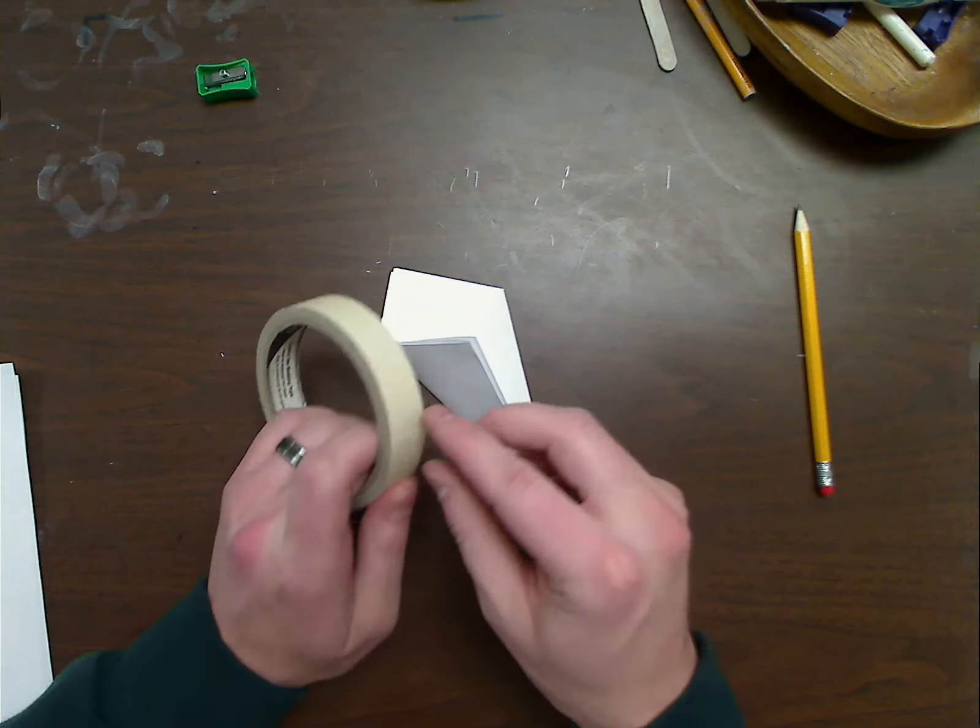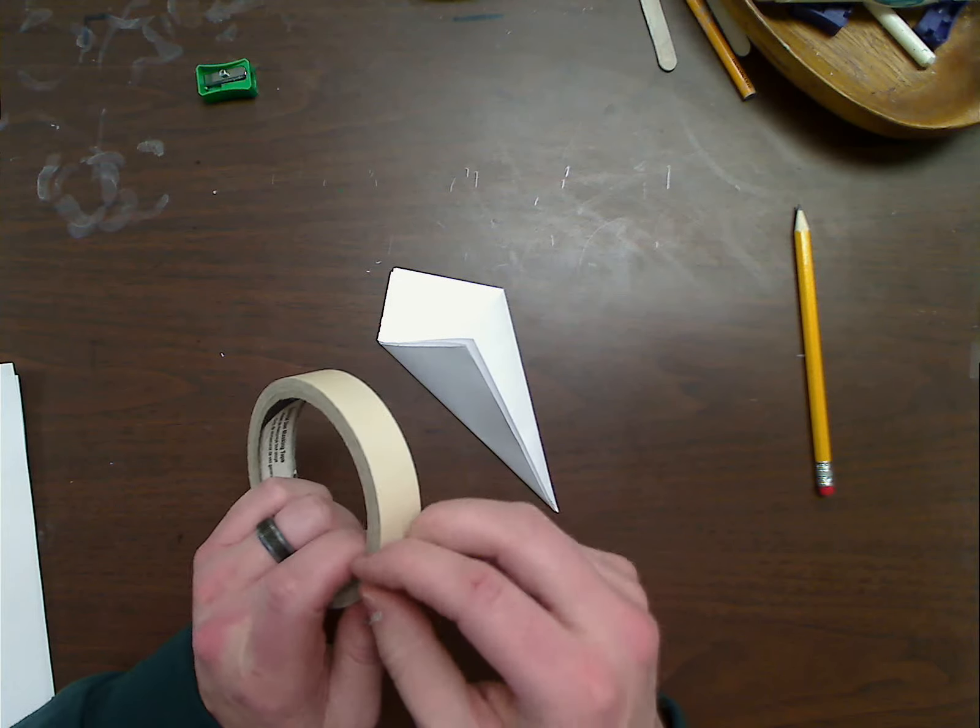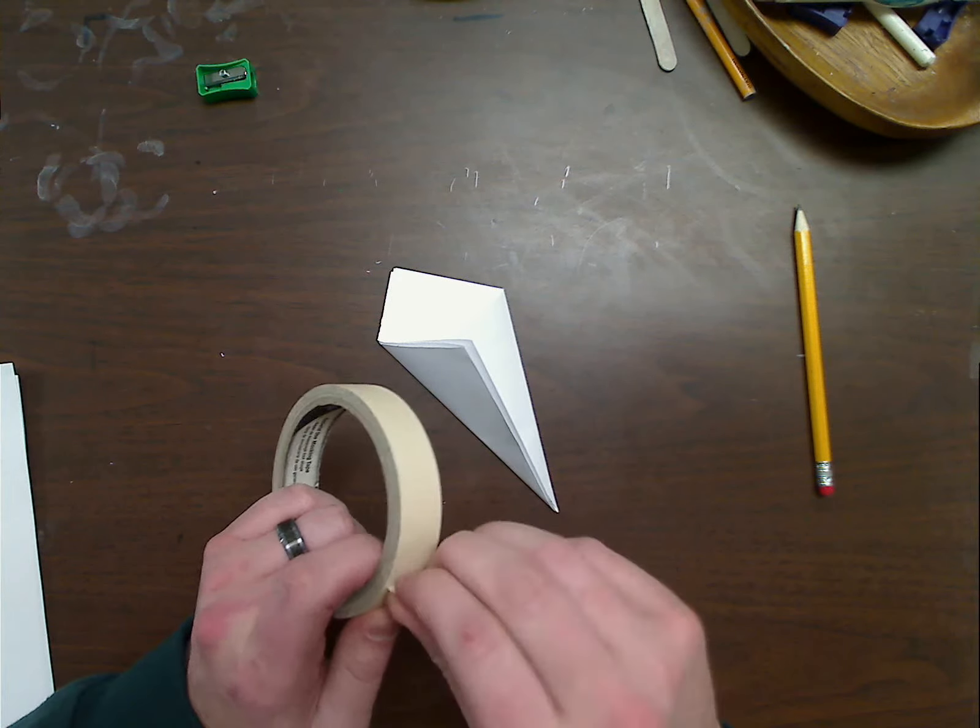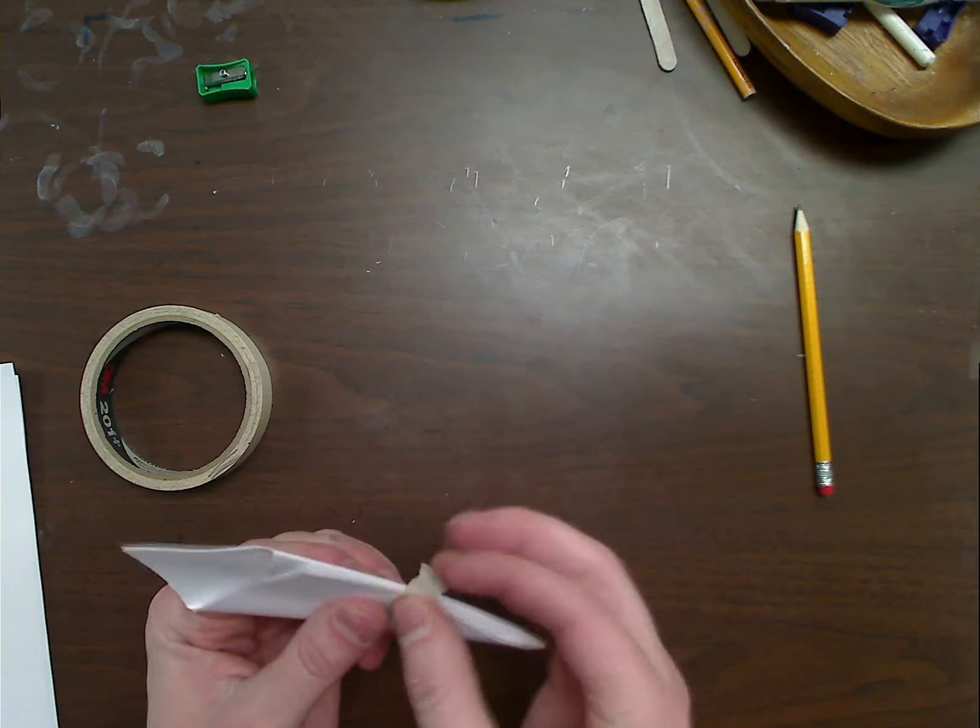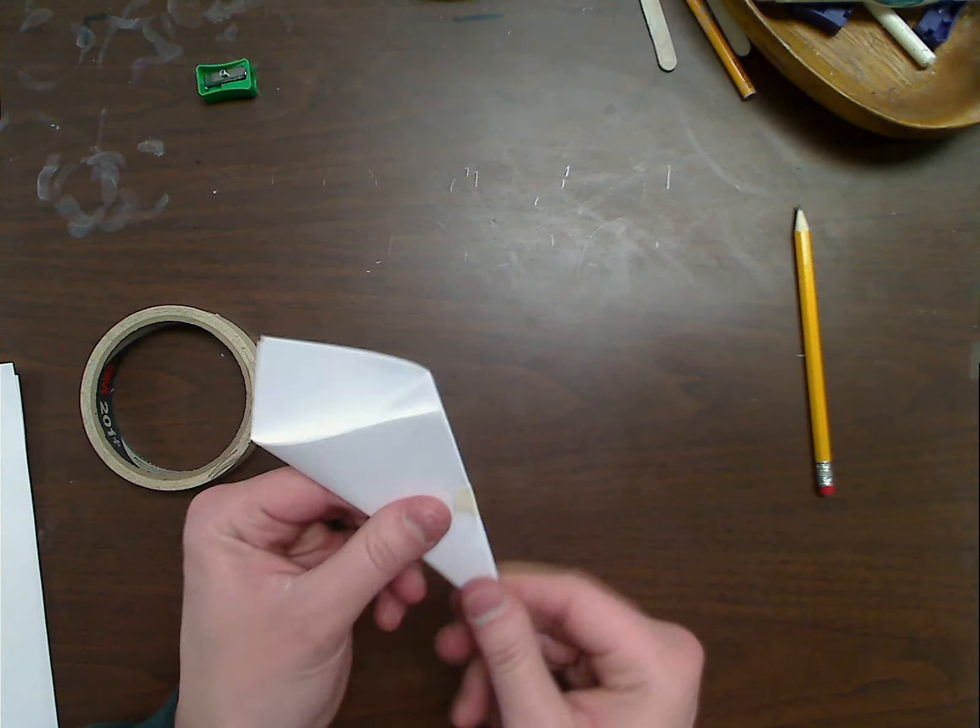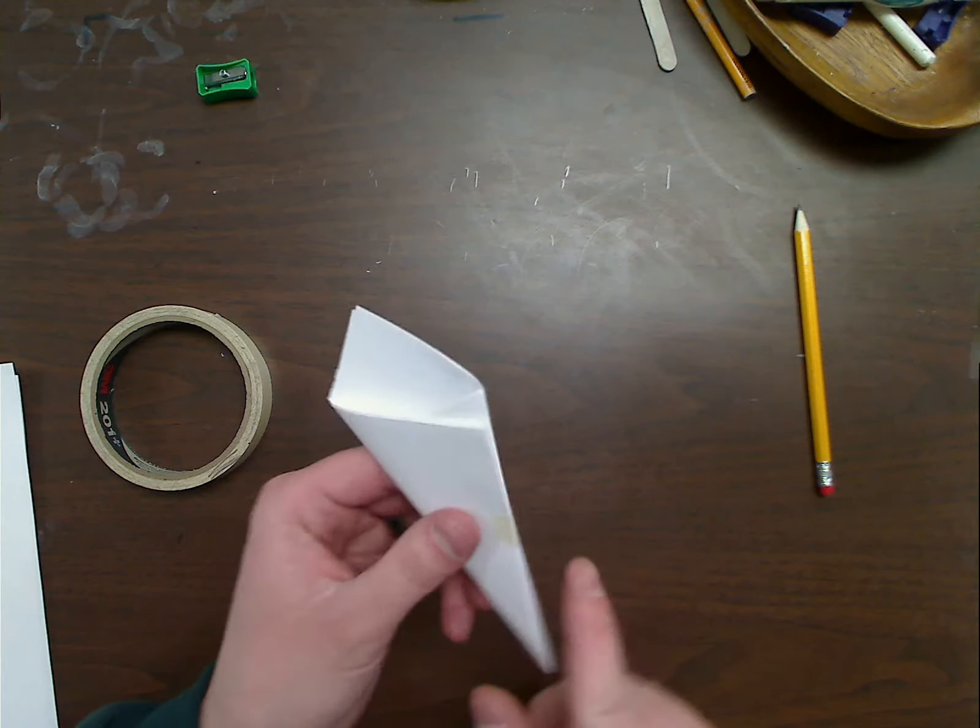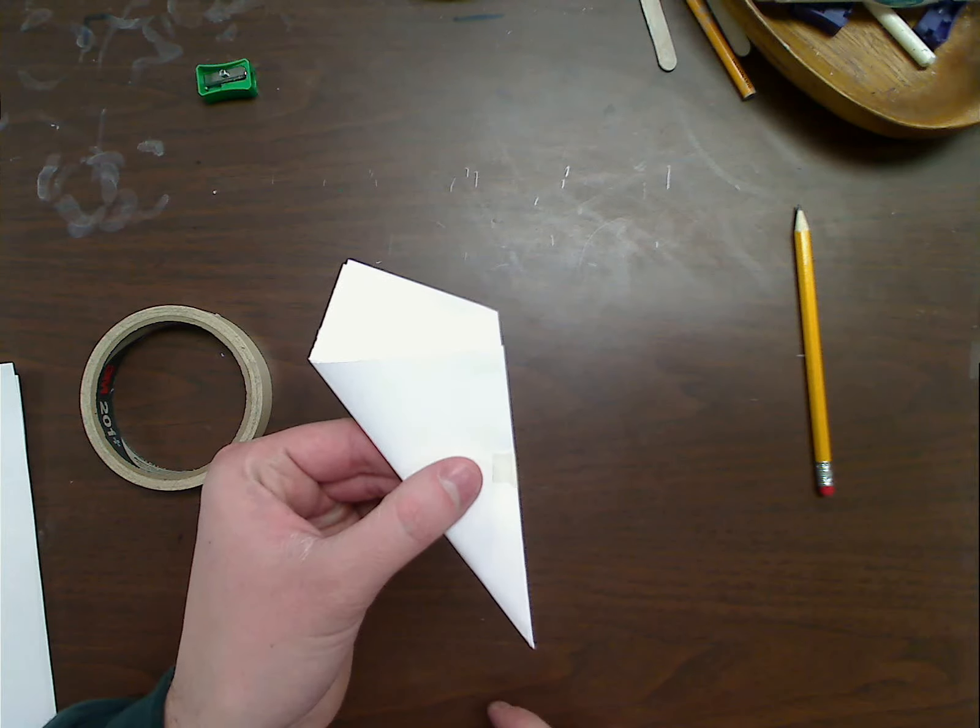After you have that done, you can use a little piece of tape, just a little piece, nothing too big. Now I'm going to tape those together so it doesn't keep opening. I'm just going to tape this side here together.